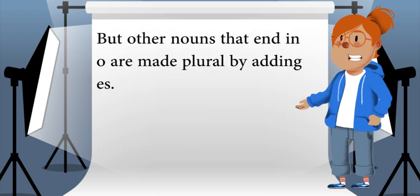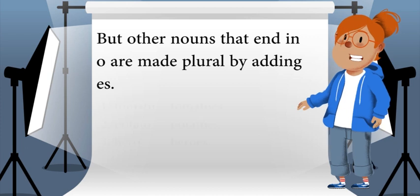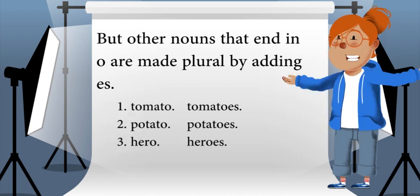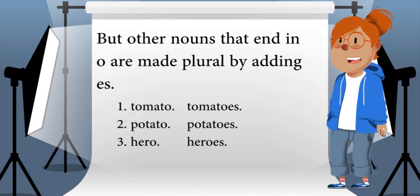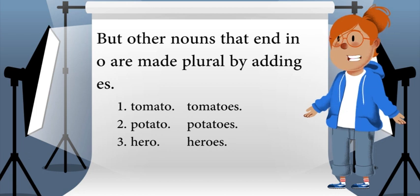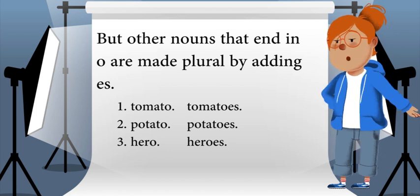But other nouns that end in o are made plural by adding es. Tomato becomes tomatoes, potato becomes potatoes, hero becomes heroes.